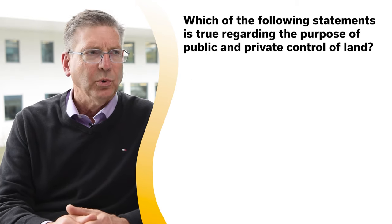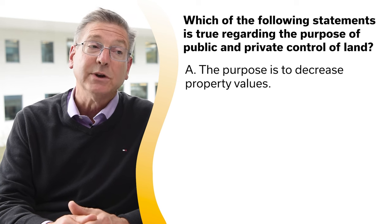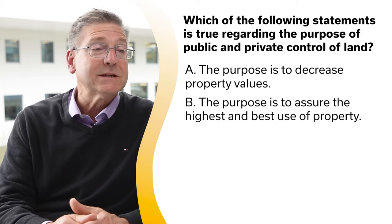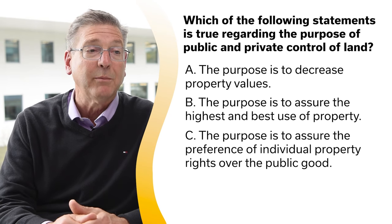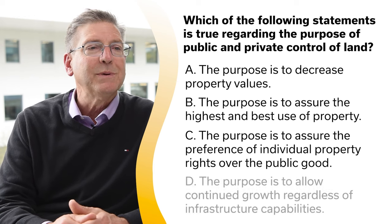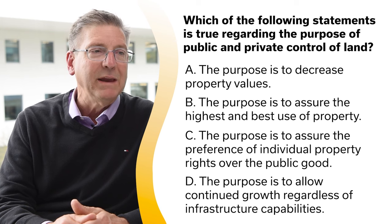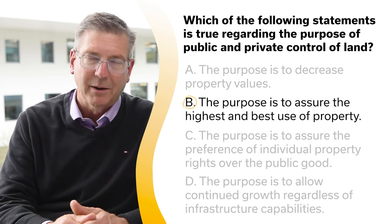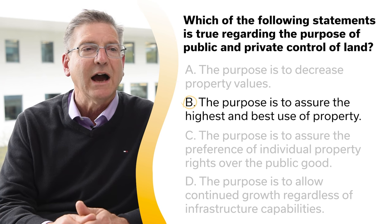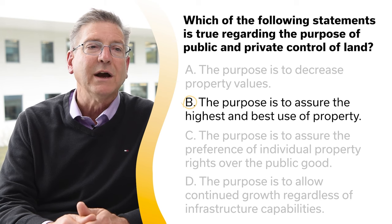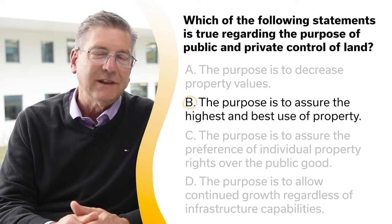Which of the following statements is true regarding the purpose of public and private control of land? A, the purpose is to decrease property values; B, the purpose is to assure the highest and best use of property; C, the purpose is to assure the preference of individual property rights over the public good; or D, the purpose is to allow continued growth regardless of infrastructure capabilities. The correct answer is B, the purpose is to assure the highest and best use of property. The purpose includes preservation of property values, assurance of the highest and best use of property, the balance of individual property rights with public good, and control of growth within infrastructure capabilities. Typically when you see highest and best use, that's probably the right answer.